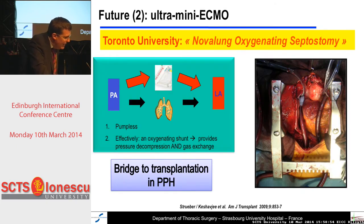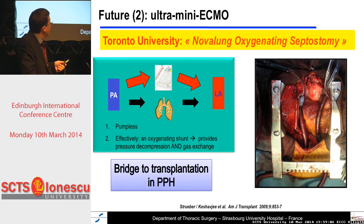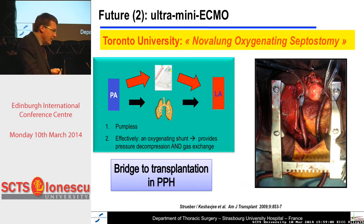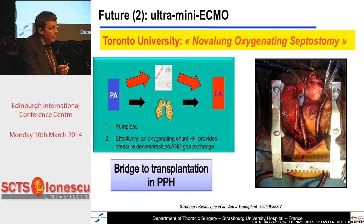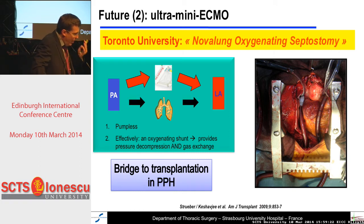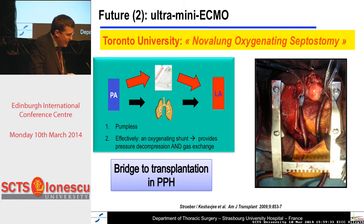Another possibility is the ultra-mini ECMO, which applies only in the framework of lung transplantation. It has been developed by the Toronto University group. They call it the Novalung oxygenated septostomy, and have published its use as a bridge to transplantation in primary pulmonary hypertension. Using the Novalung, it is a pumpless ECMO between the pulmonary artery and the left atrium, providing pressure decompression and gas exchange.